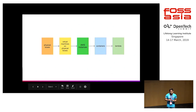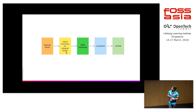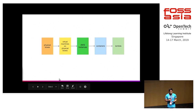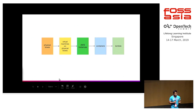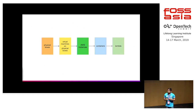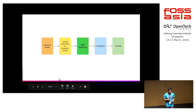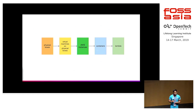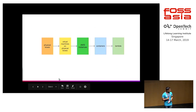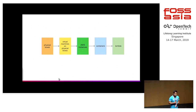Then we have containers — like Kubernetes and Docker — as a more popular solution for enterprise applications and developers. After containers, we came to Lambda. Lambda is a serverless product from AWS. For Google Cloud, you can use Cloud Functions, and there's also Azure Functions. They are the same concept but provided by different cloud providers.